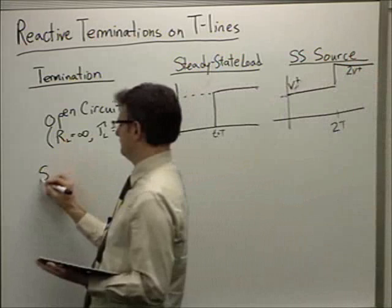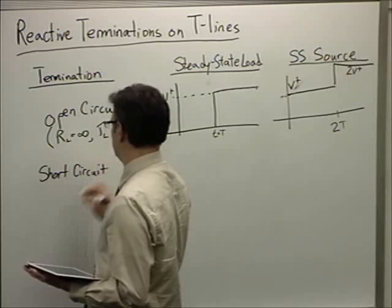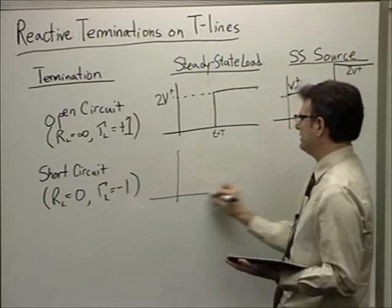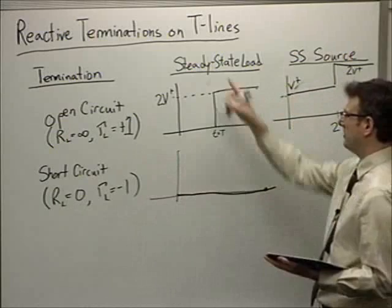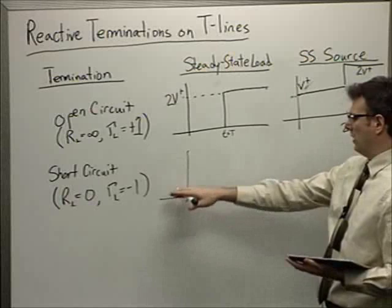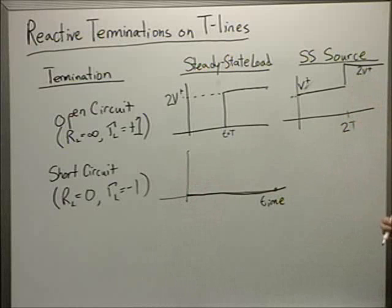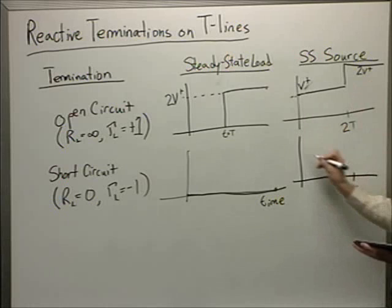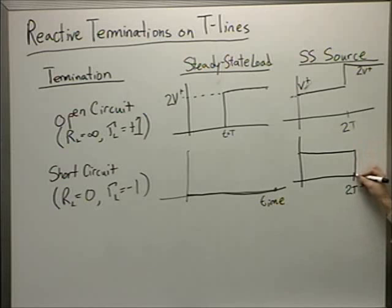The short circuit: R_L equals zero, Γ_L equals negative one. In this scenario, I don't see anything at my steady-state load. The waveform comes down, reflects with a negative one reflection coefficient, so the total voltage is still zero as it should be at a short circuit. At my steady-state source, I excite a V⁺, then two transit times later it has been erased from the line and I go back down to zero. This is all review.